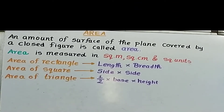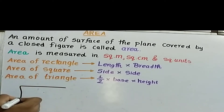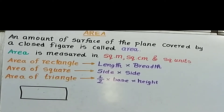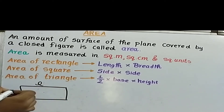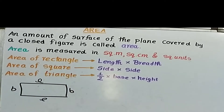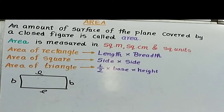Here are the formulas we have to learn about three shapes in this standard: Area of a rectangle, area of a square, and area of a triangle. Let us first draw a rectangle. Area of a rectangle means the length multiplied by the breadth. A rectangle has two lengths and two breadths. If the length and the breadth are given, just multiply them to find the rectangle's area.